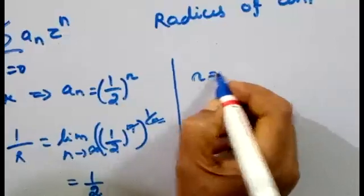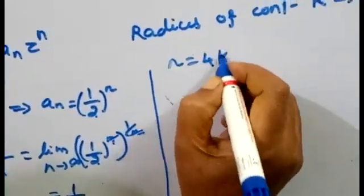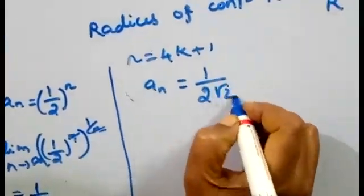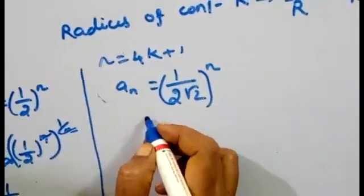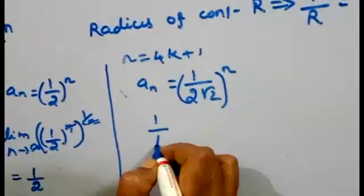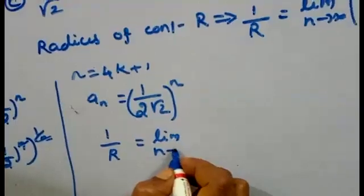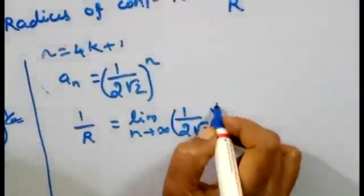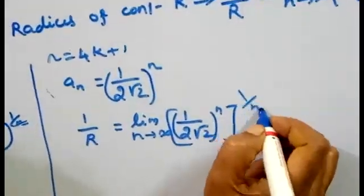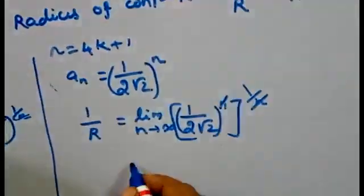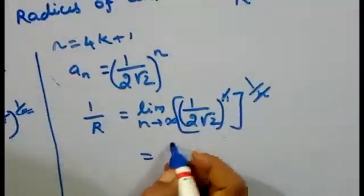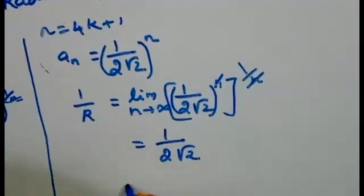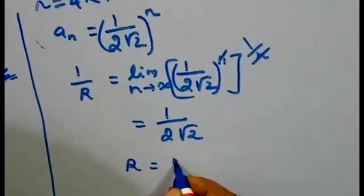Second case: n equal to 4k+1. In this case, a_n equals (1/(2√2))^n. The radius of convergence: 1/R equals the limit as n tends to infinity of [(1/(2√2))^n]^(1/n). Since the limit is constant, the value is 1/(2√2), so R equals 2√2.